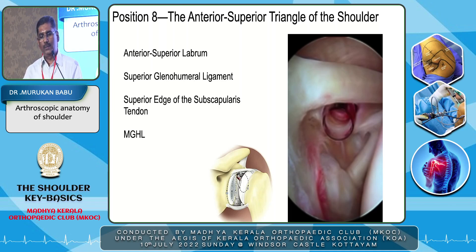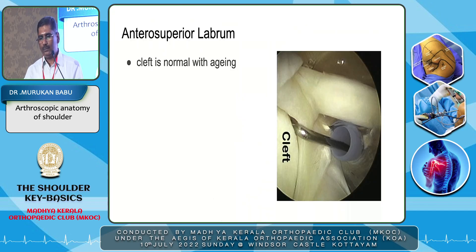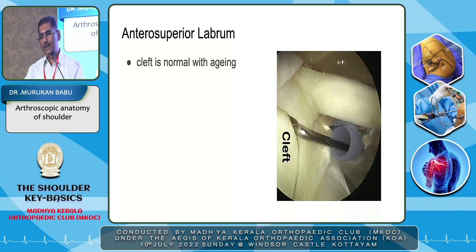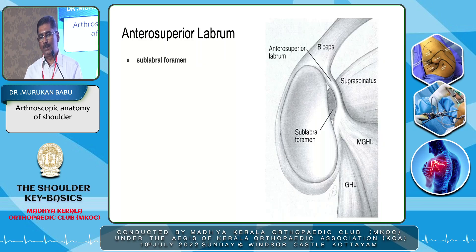The anterior superior labrum — with aging, you can confuse it with pathological changes. The cleft is normal with aging; probe that area to see any pathological changes. Sometimes the labrum is detached in the superior part showing a sublabral foramen — that is also normal.